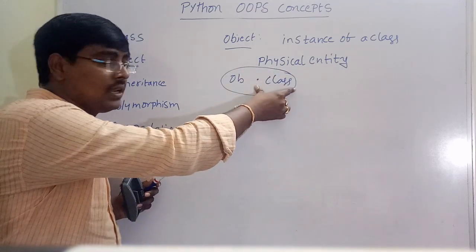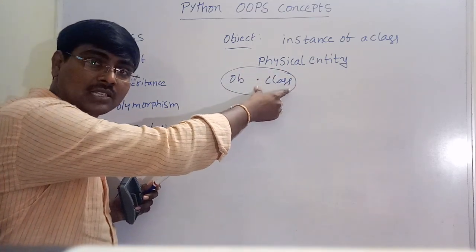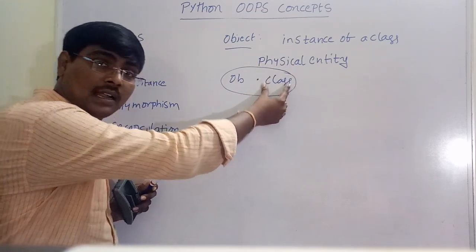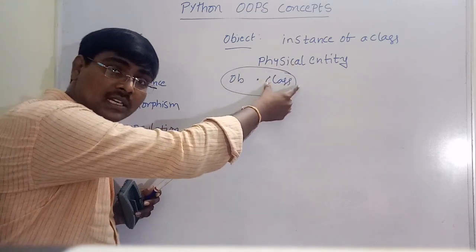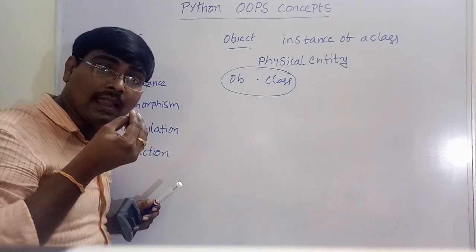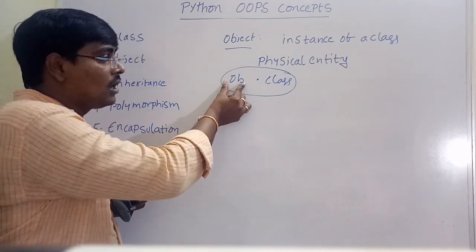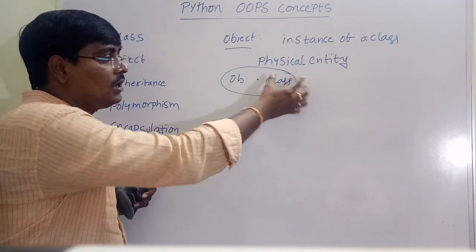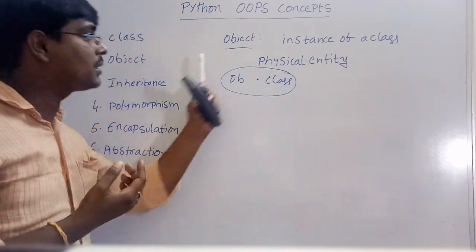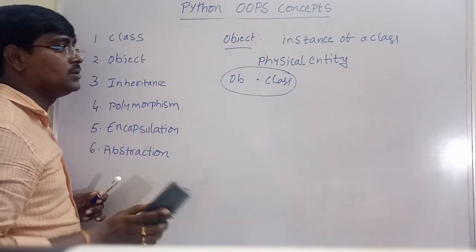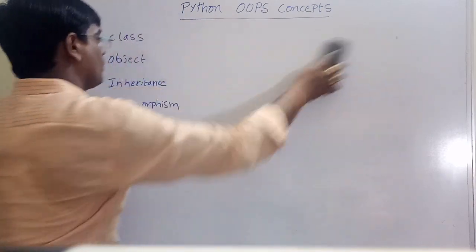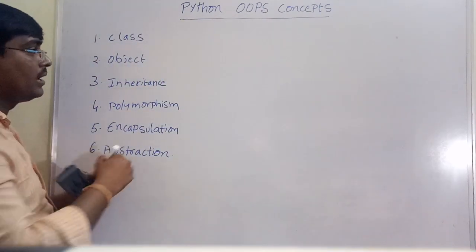The variables and methods in the class are called class members. By using object name dot class members, we can access all the members of the class. Now let's move to inheritance.